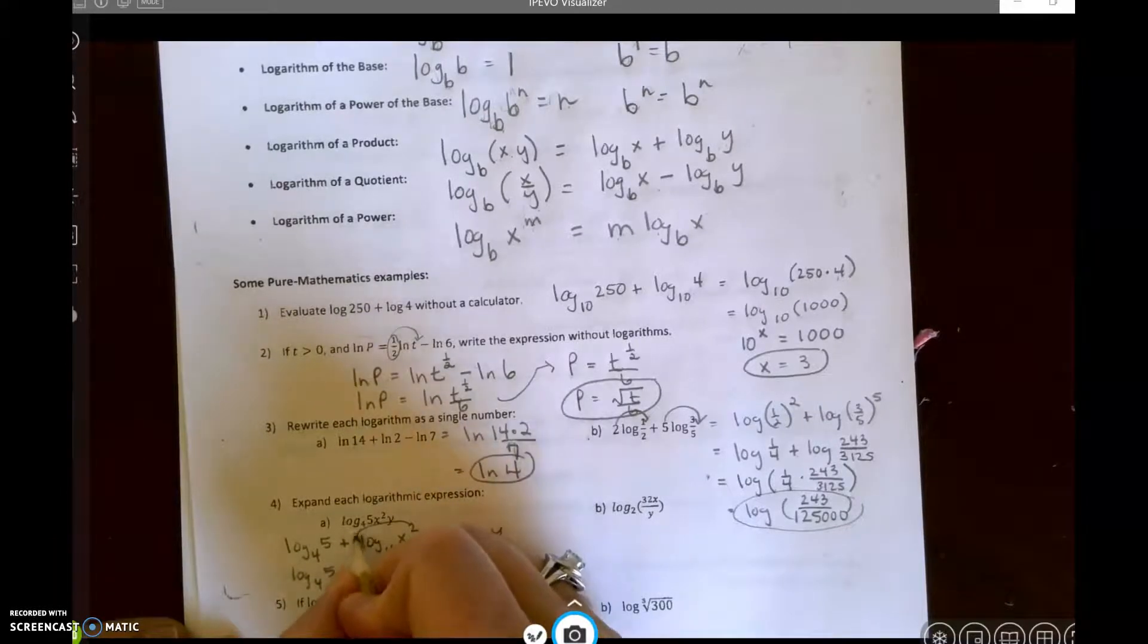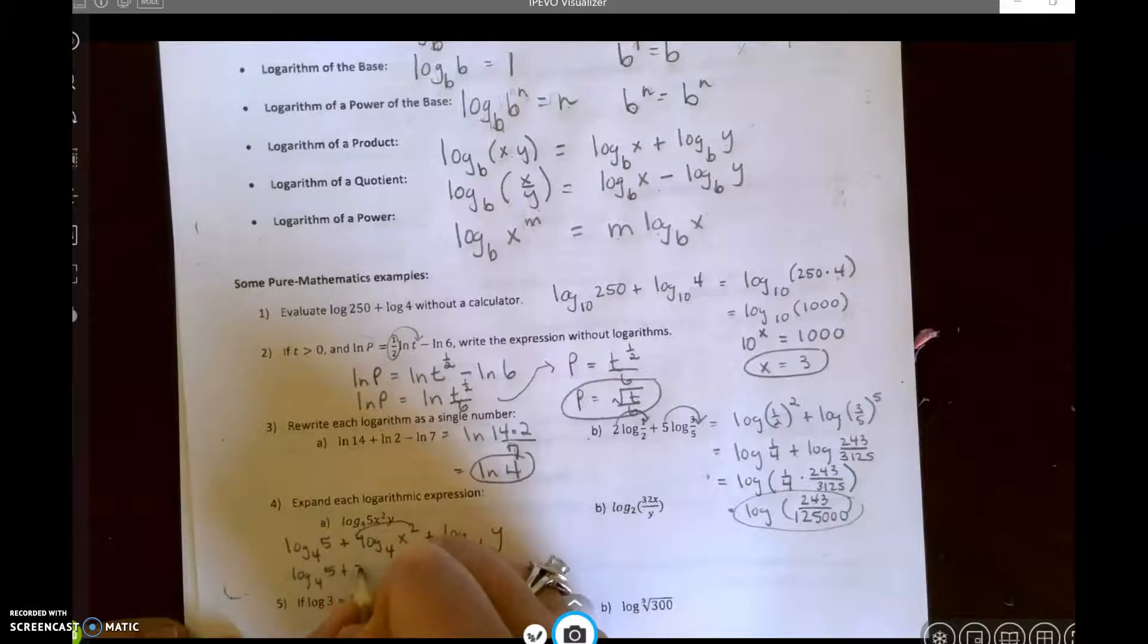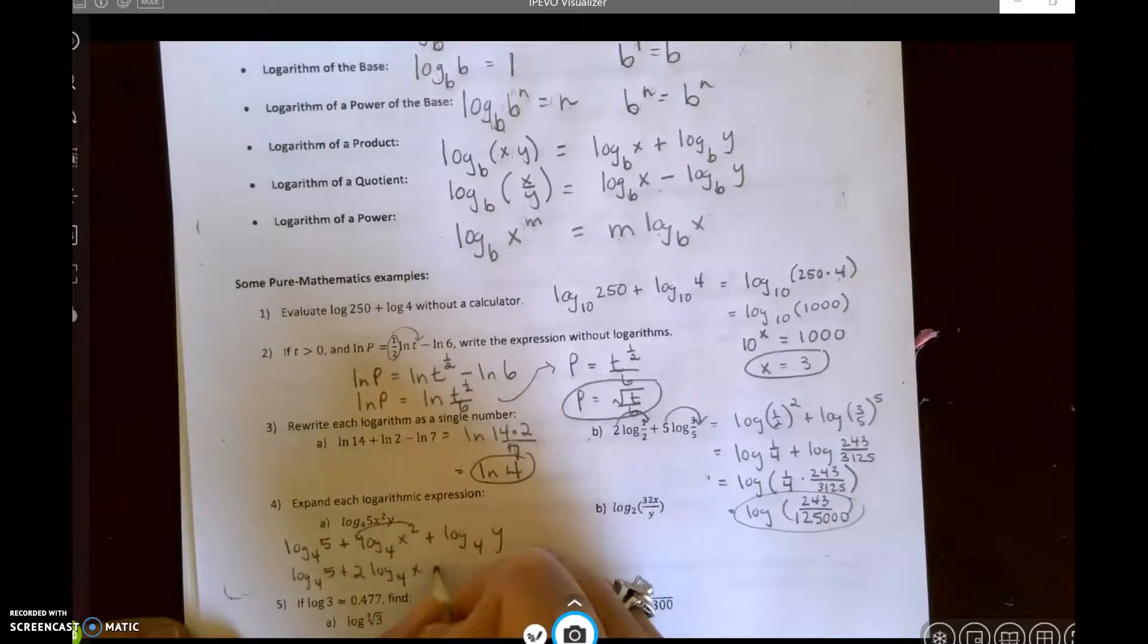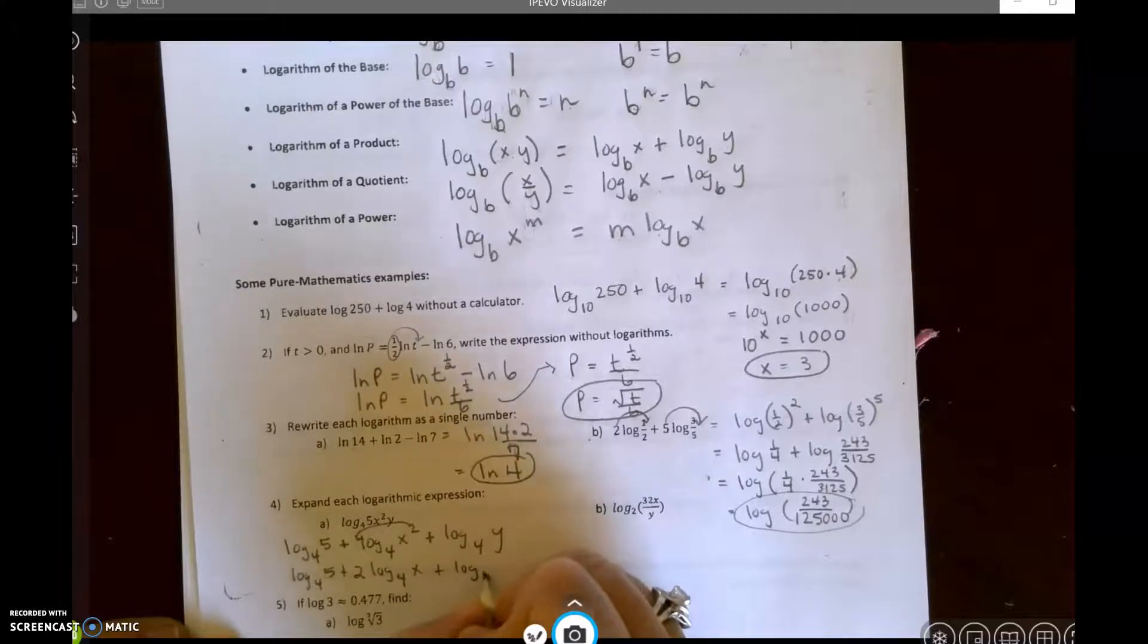This exponent can move to here. So plus 2 log base 4 of x. This does not have an exponent. So it's right, log base 4 of y.